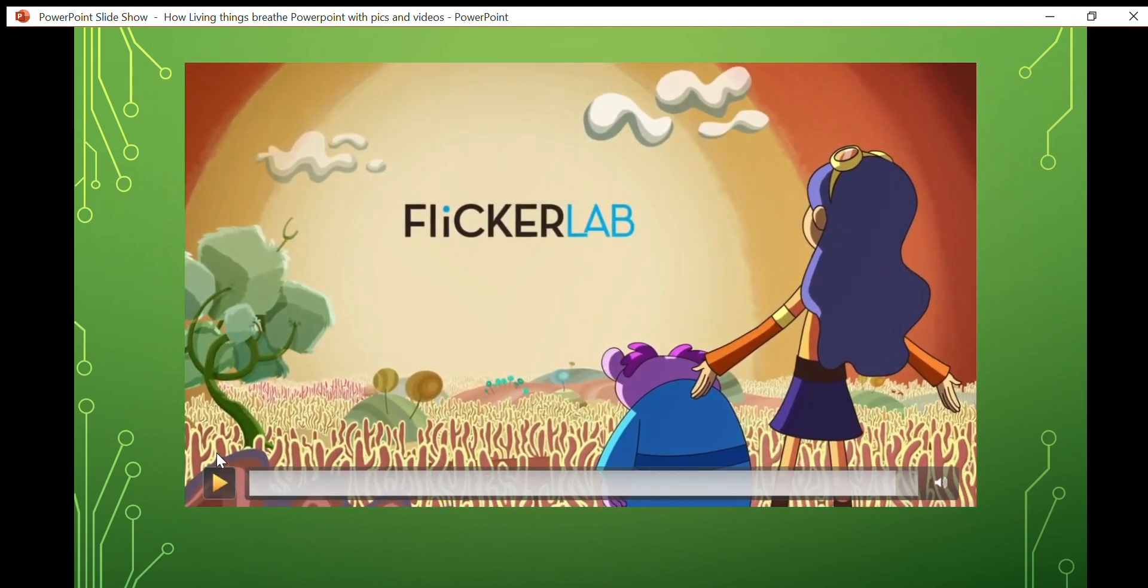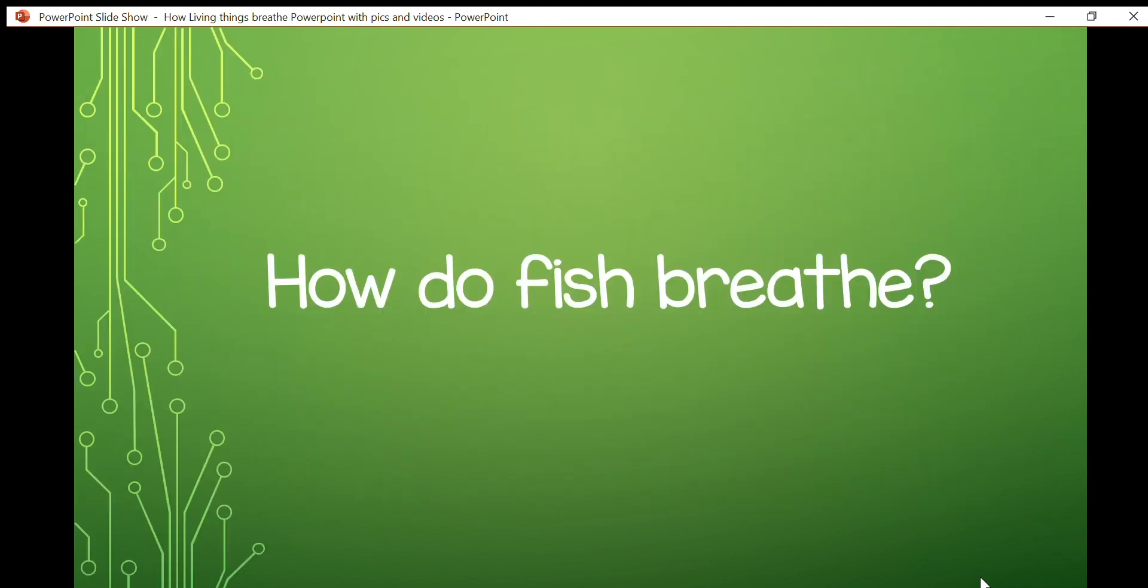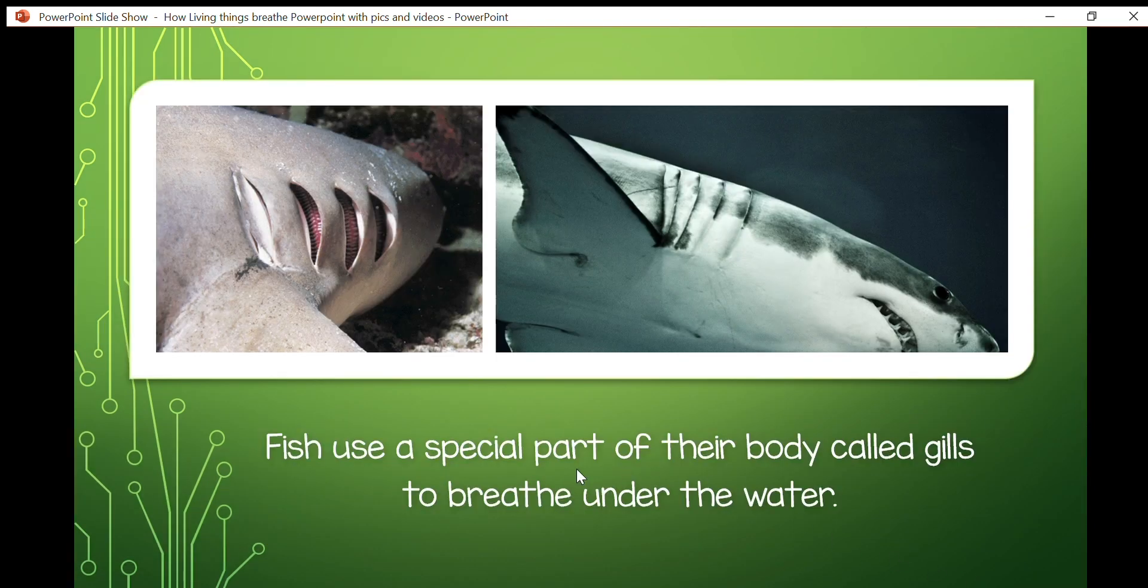So in that video, we saw how our lungs work and we learned that our lungs and our body need what's called oxygen. That's something that's in the air that we breathe in. So our next slide, we're going to talk about how another animal breathes. This one says, how do fish breathe? Now you might be wondering, how do fish breathe? They live underneath the water. How do they get the oxygen from the air if they're not out in the air?